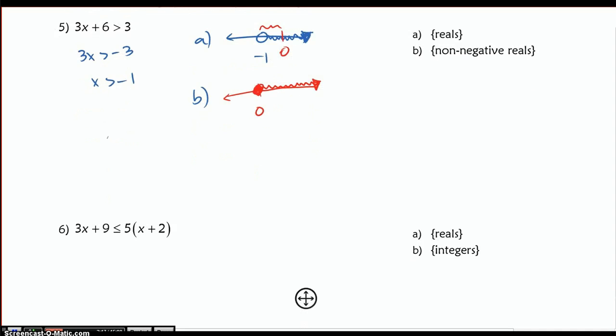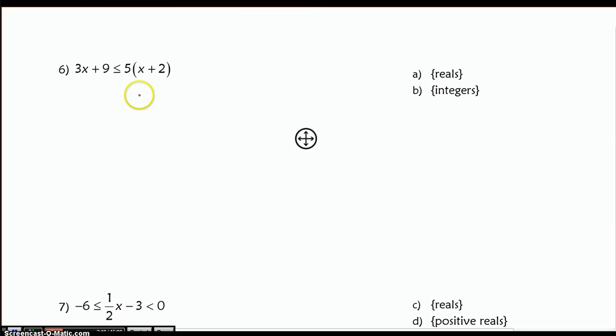In problem number 6, I want to do the same thing. So I'm going to solve this here. And I get my solution of x is greater than or equal to negative 1 half. When I graph this with respect to all reals, I'm going to have a normal graph here, since negative 1 half is a real number, as well as all values greater than or equal to it.